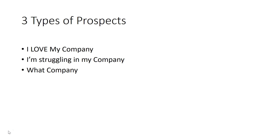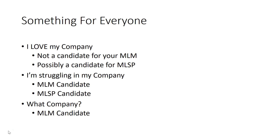We run across three types of prospects in our field. The first type is already in network marketing and they absolutely love their company — nothing they would change. The second prospect probably loves their company but they're struggling; they just haven't figured it out or can't get to the next level. The third type is not in MLM at all — they don't even know what you're talking about.